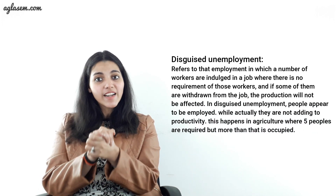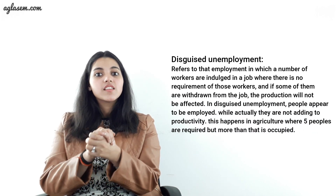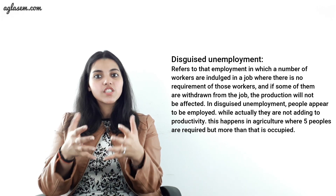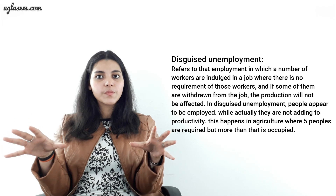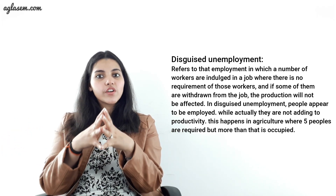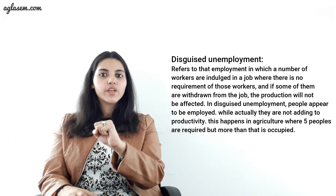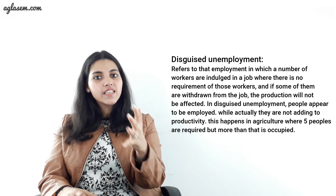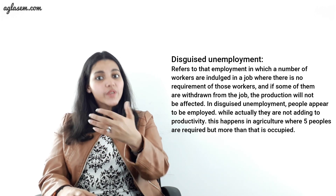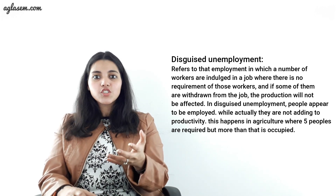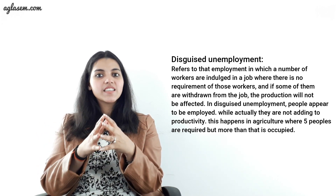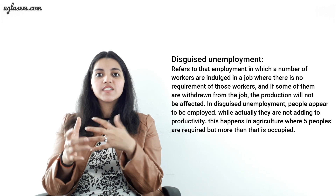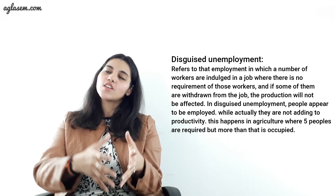Disguised unemployment refers to employment in which the number of workers engaged in a job is more than what is actually required. If some of them are withdrawn, production will not be affected. In disguised unemployment, people appear to be employed while actually they are not adding to productivity. This happens in agriculture where only 5 people are required but more than that are occupied.